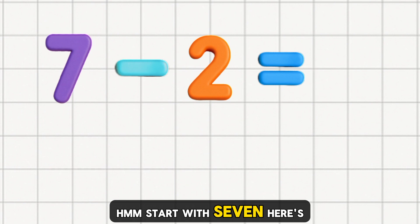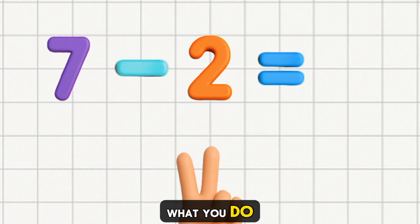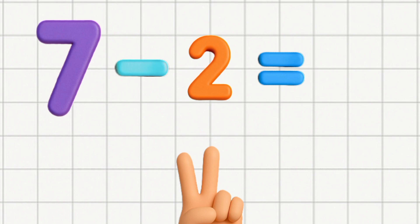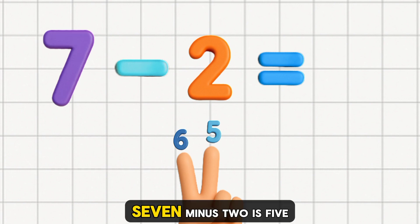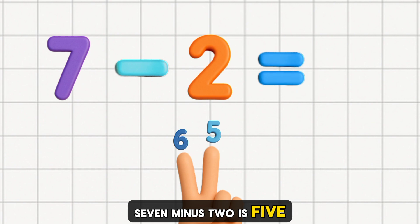Start with seven, here's what you do. Six, five, that's the clue. Seven minus two is five.